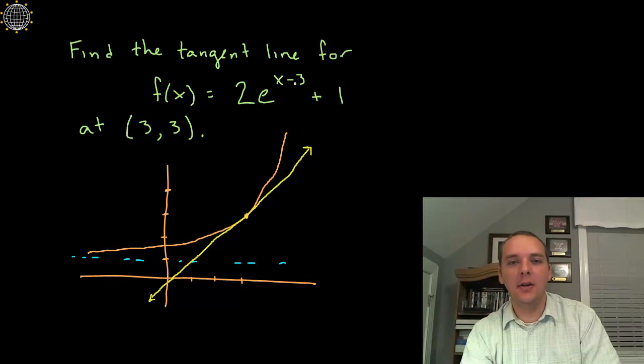The translations that are done here, the minus three is going to move that graph to the right three units and the plus one is going to move it up one unit and the two is going to stretch it a little bit. So this is just a rough sketch of it. Here's three, three, that's the point of tangency and I went ahead and drew the yellow tangent line as well.